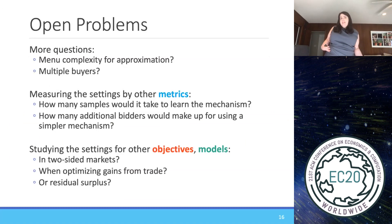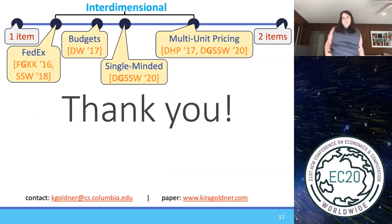So I still think there's a lot less to study. There's a lot more questions in terms of what's the menu complexity for mechanisms that have approximation guarantees. What about multiple buyers? What about other metrics, like sample complexity, or how many additional buyers you have to add? What about other models and objectives, like two-sided markets, optimizing gains from trade, residual surplus? I think there's a lot left to do in this regime, and I'm excited to see people work on it. So thank you.